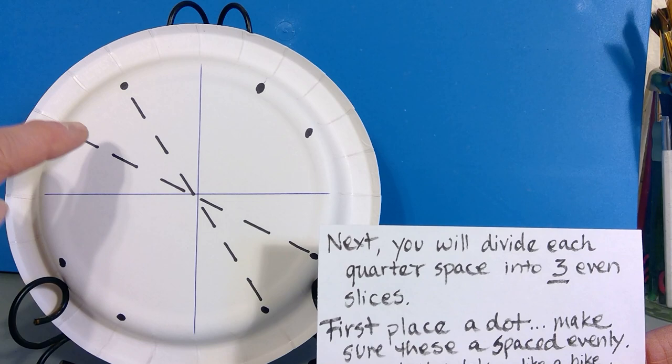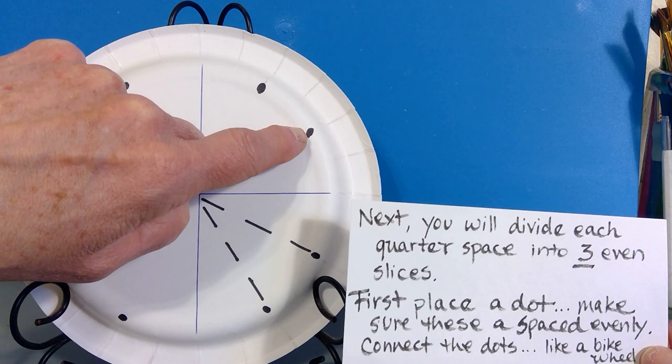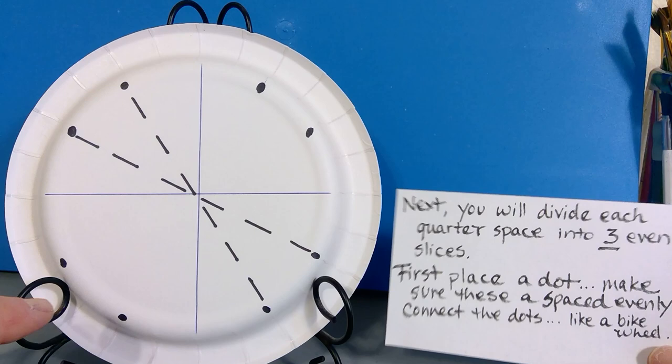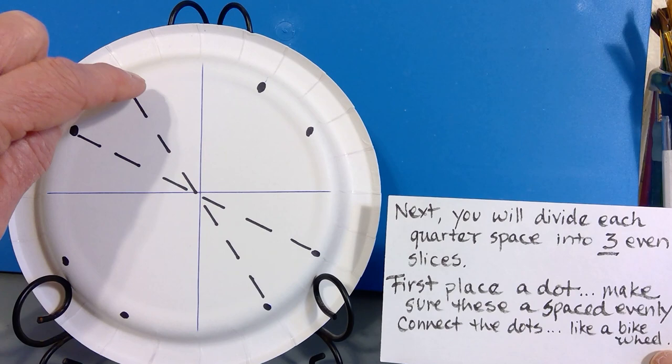What I found helpful is to first place a dot, making sure that these dots are spaced out evenly. Then you connect the dots running through the center here so that you'll have even lines just like a bike wheel.